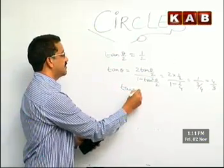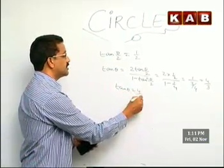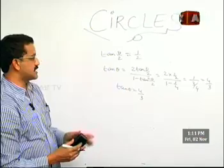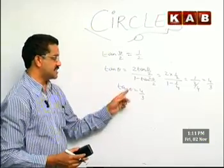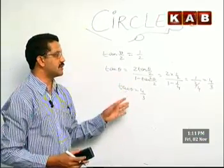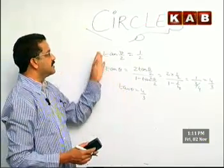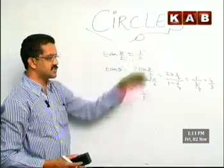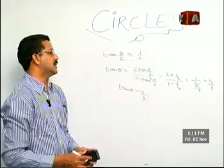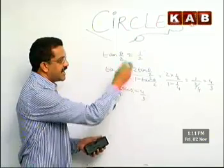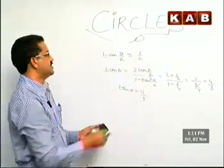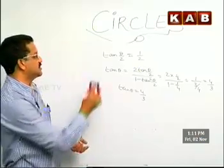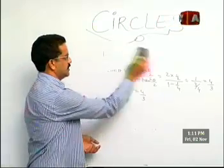This is a very important question in very short answer models. This is the fifth question — from an outside point a tangent is drawn, and find the angle between the tangents. Let me go to the next short answer question.